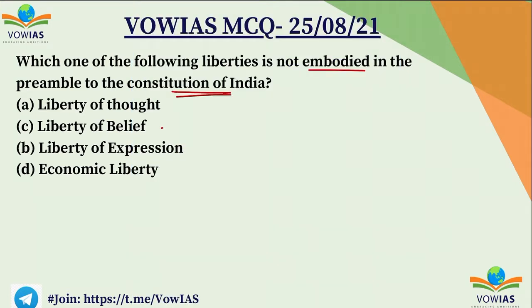If you see these liberties, we have liberty of thought, expression, belief and faith. So option D, economic liberty, is not mentioned in the preamble. So option D is the correct answer — economic liberty.